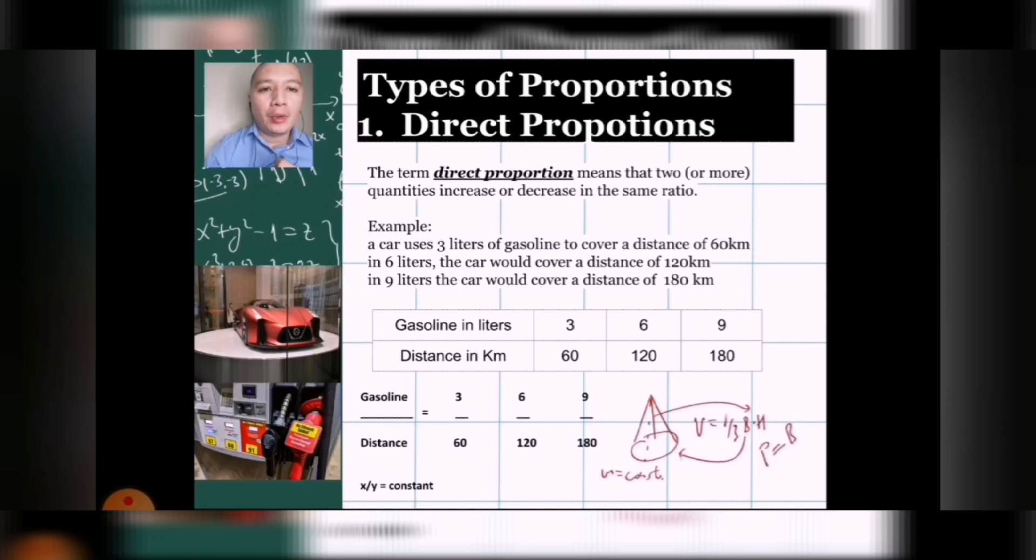For our first example, the term direct proportion means that two or more quantities increase or decrease in the same ratio. So, in our example, a car can use 3 liters of gasoline and it would cover 60 kilometers. It can use 6 liters and it would cover 120 kilometers. And if it would use 9 liters, it can cover a distance of 180 kilometers. Now if we would put that in a tabular presentation, here's what we will be seeing.